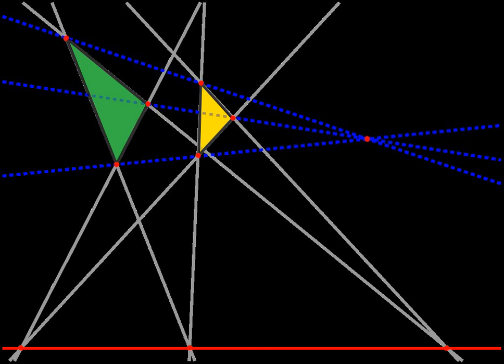Central perspectivity means that the three lines AA', BB', and CC' are concurrent at a point called the center of perspectivity.